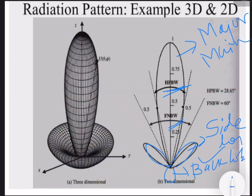There will be one more lobe called the back lobe. At different angles we have the radiation pattern, and the major lobe is clearly visible. This is the two-dimensional view, but when we represent it in the Cartesian coordinate system — that is the three-dimensional X, Y, and Z coordinate system — we can see the full pattern, though in the lab we just record values in two dimensions.